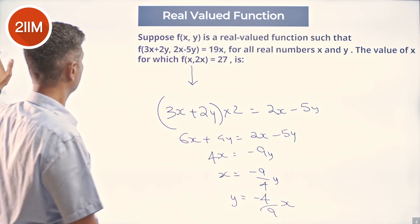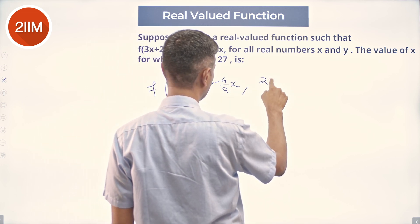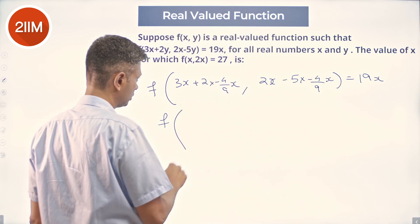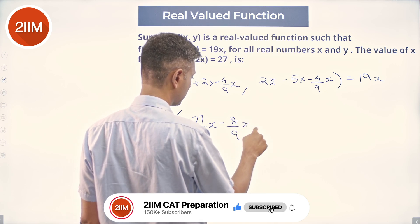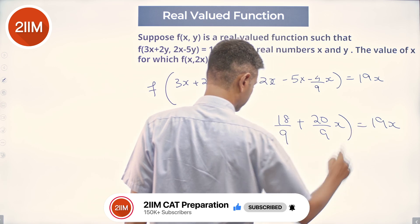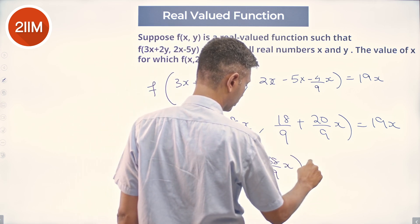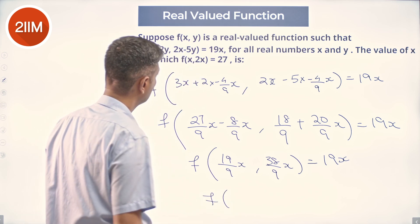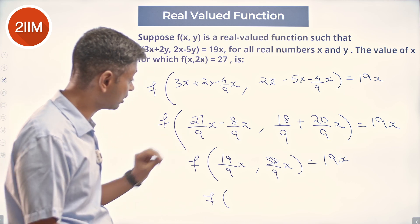I'm going to substitute y = −(4/9)x. So f(3x + 2·(−4/9)x, 2x − 5·(−4/9)x) = 19x, which simplifies to f(3x − 8/9·x, 18/9·x + 20/9·x) = 19x, giving f(19/9·x, 38/9·x) = 19x.